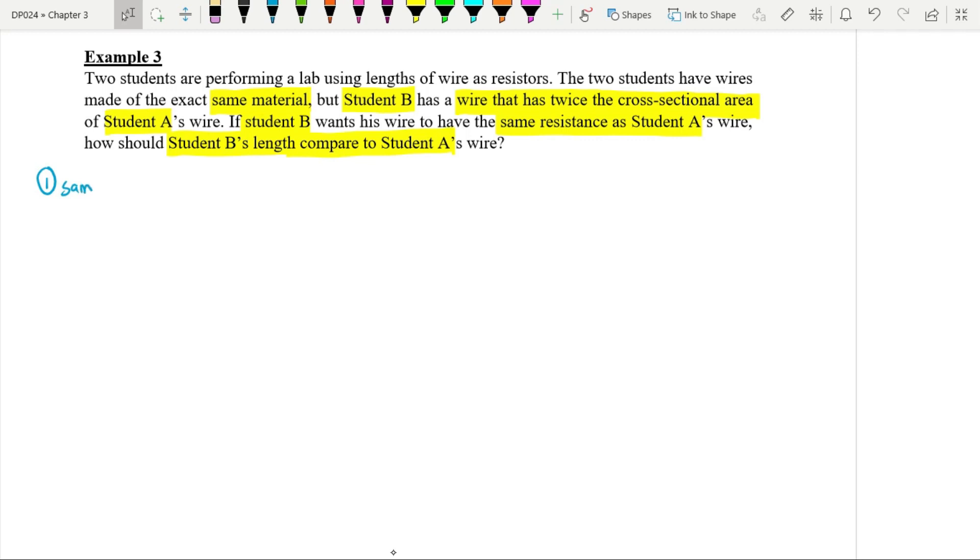So that's the first point. Same material, that means, as I explained in class, same materials means resistivity of student A, resistivity of wire for student A, should be equal to resistivity of wire for student B.